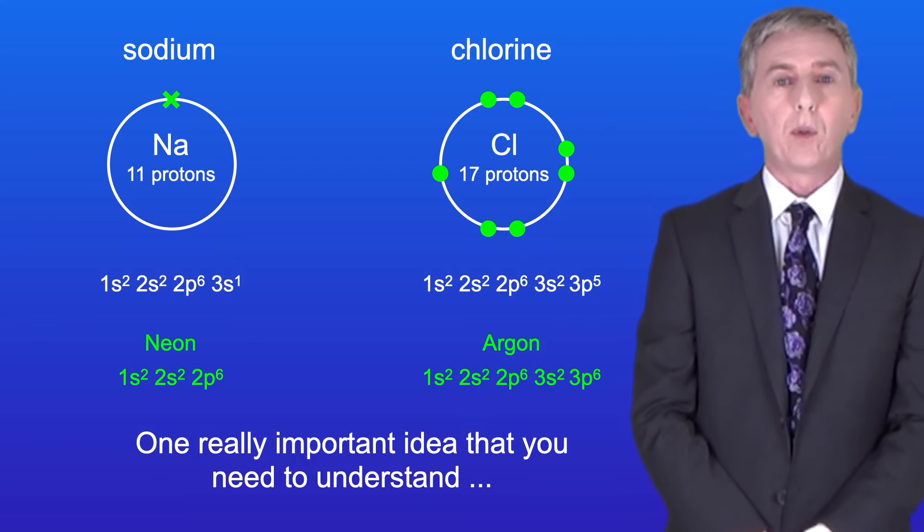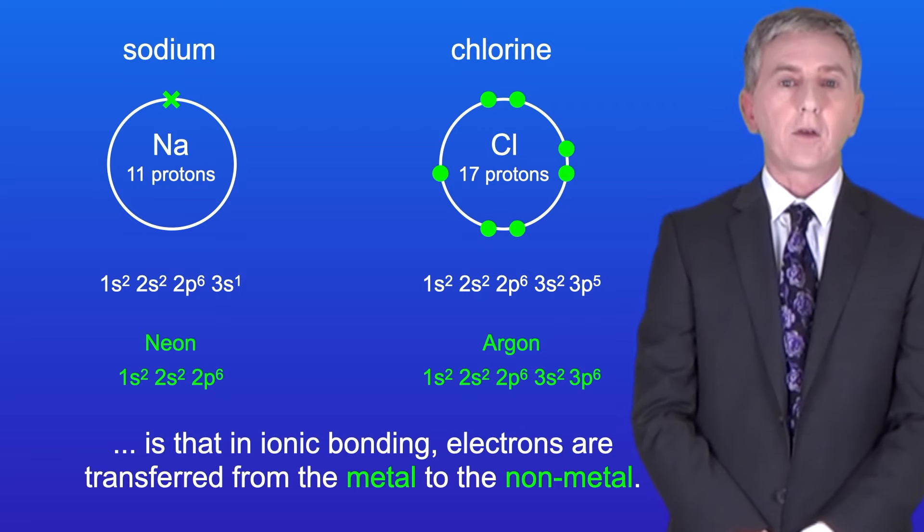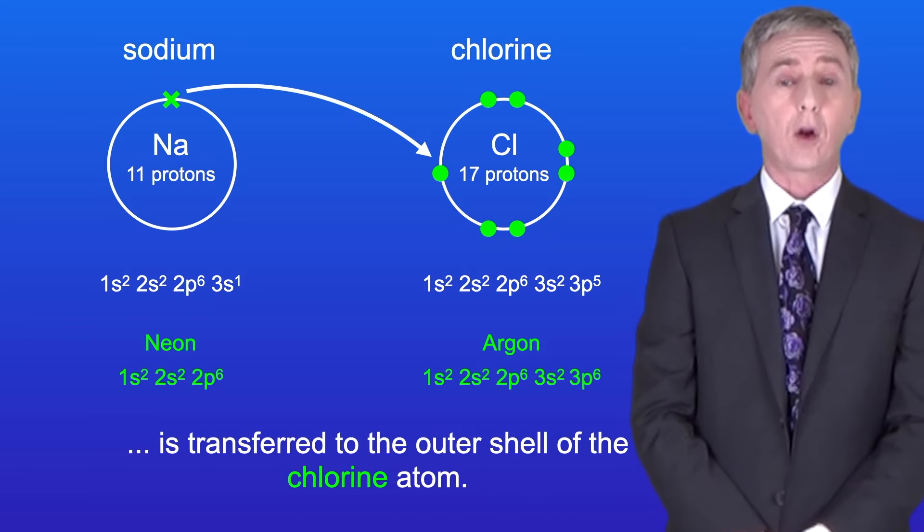Now one really important idea you need to understand is that in ionic bonding, electrons are transferred from the metal to the non-metal. So in this case the electron in the outer shell of the sodium atom is transferred to the outer shell of the chlorine atom.